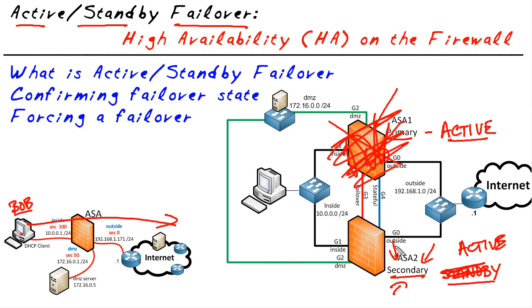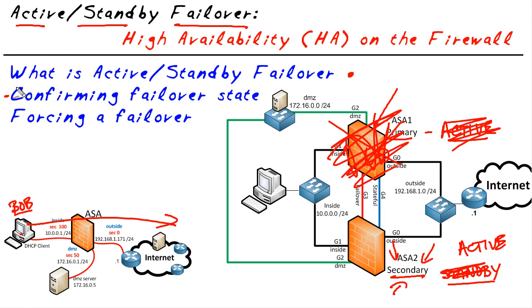In this micro nugget, we're going to look at Active Standby Failover — two devices, one active and one standby. If there's a problem, they revert roles so the secondary becomes active. We'll also look at how to confirm a failover state.